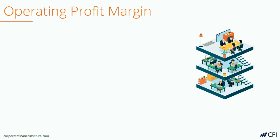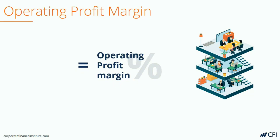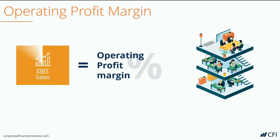The second key profitability ratio that we're going to analyze is directly related to the earnings before interest and taxes of the business. It's known as the operating profit margin. In order to calculate operating profit margin, we take the earnings before interest and taxes — also referred to as EBIT or operating profit — and divide it by sales revenue to return a percentage.